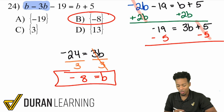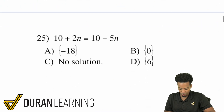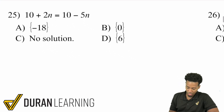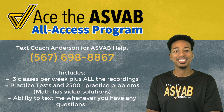I'll walk you through just two more, my party people, and we will be good. So let's check this one out. We have 10 plus 2n equals 10 minus 5n.